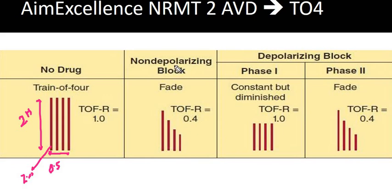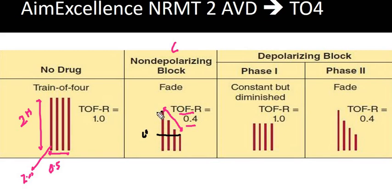In cases of non-depolarizing block, or competitive block, with each successive stimulus there is a diminishing amplitude. That is where the train-of-four ratio becomes interesting. Here it comes up as 0.4. If we put a graph where T1 goes up to 100 and T4 goes up to 40, the ratio T4/T1 equals 0.4. In cases of competitive blocker, the train-of-four ratio is less than or equal to 0.4.